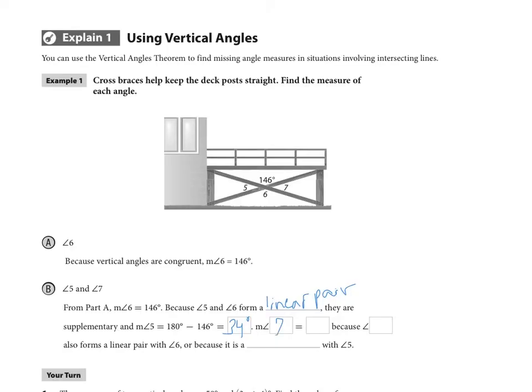Now the measure of angle 7 is equal to the measure of angle 5 because angle 7 also forms a linear pair with angle 6 or because it is also a vertical angle with angle 5. So really just find the one that's opposite that's equal and then the others are going to be a supplementary relationship or a quick subtraction from our magic number 180.